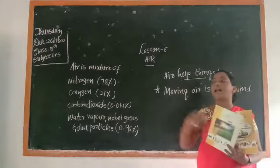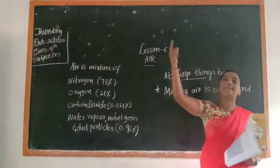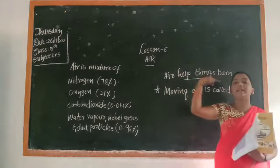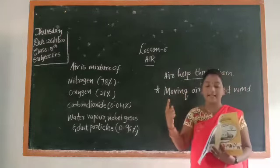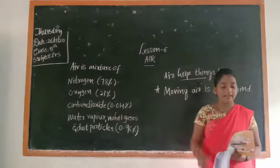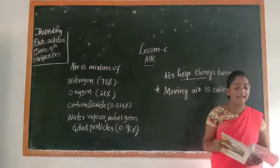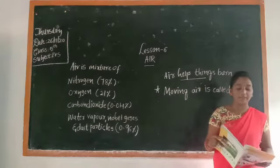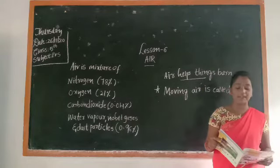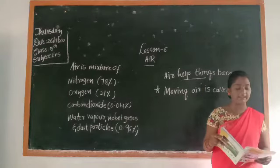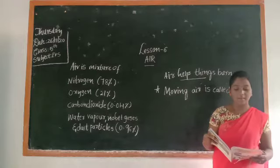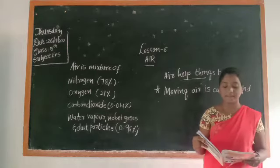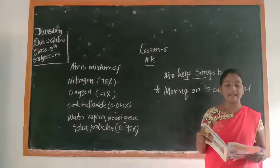When we fly kites in the sky, we can observe the air. Air is polluted by the smoke released by factories, automobiles, and burning of substances.